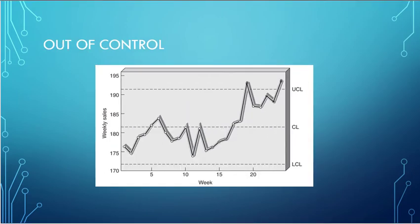This is the example that the book gives for a process that is out of control, and it is out of control because there are values above the upper control limit.